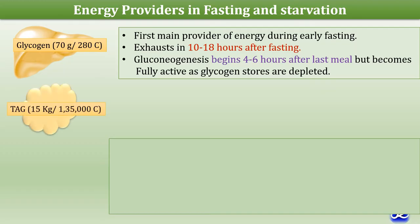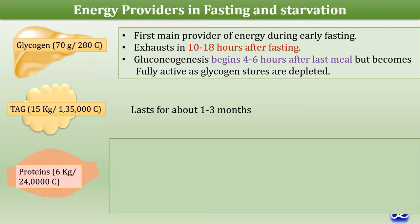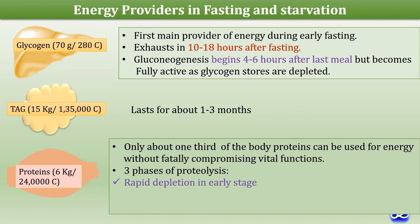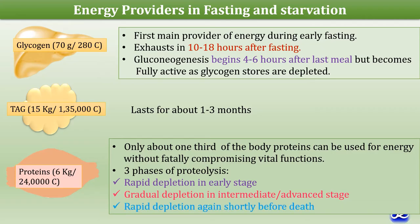Triacylglycerol stored in adipose tissue is an important energy provider, lasting about 1 to 3 months. Muscle proteins are also important energy providers, but only about one-third of body proteins can be used for energy without fatally compromising vital functions. There are three phases of proteolysis: rapid depletion in the early stage, gradual depletion in the intermediate and advanced stages, and again rapid depletion shortly before death.